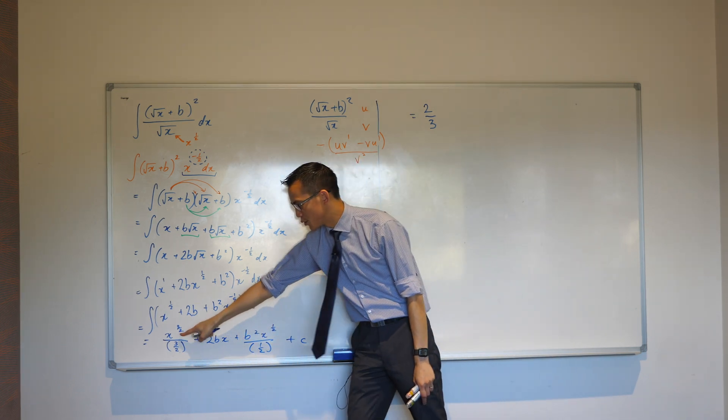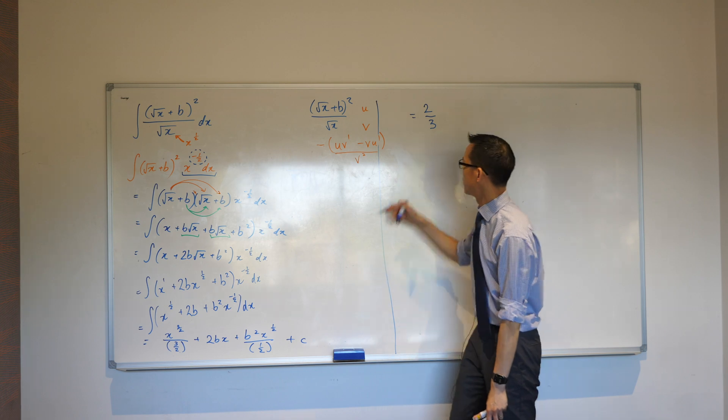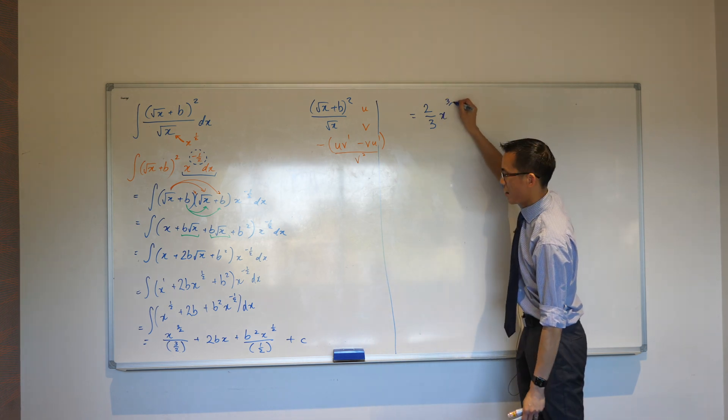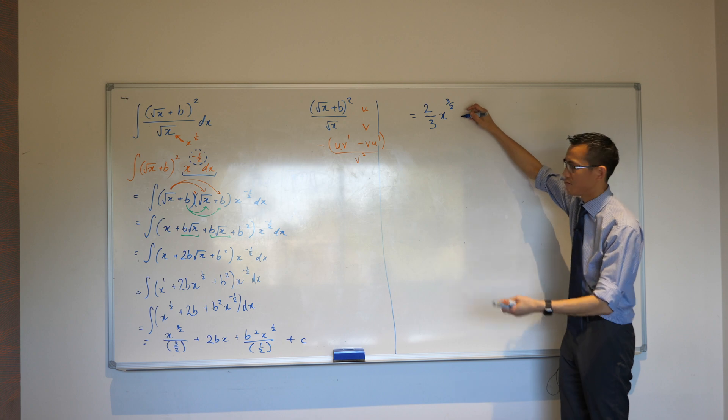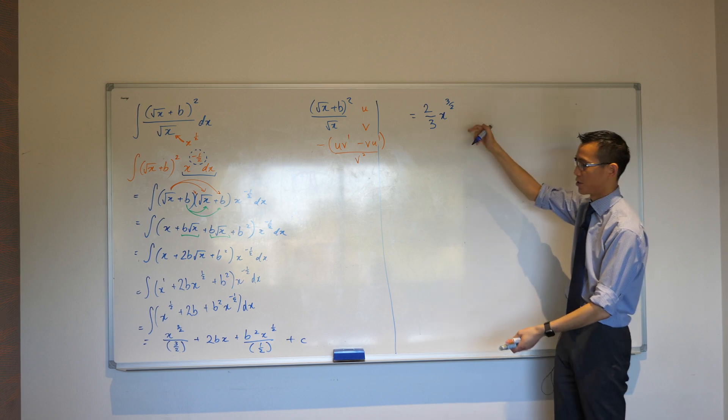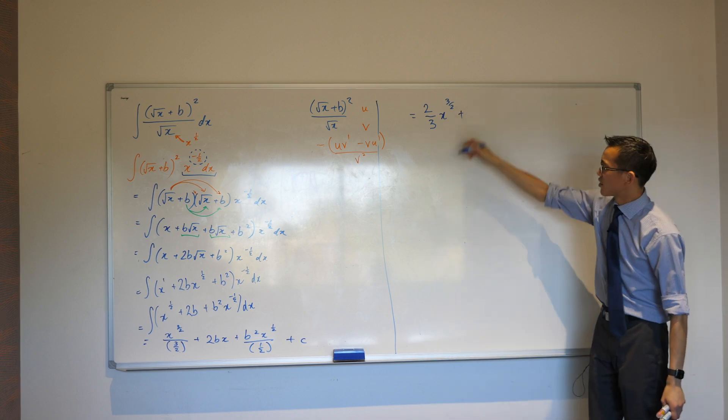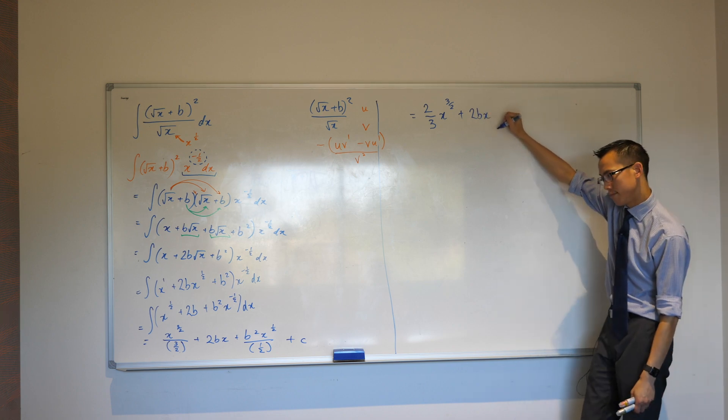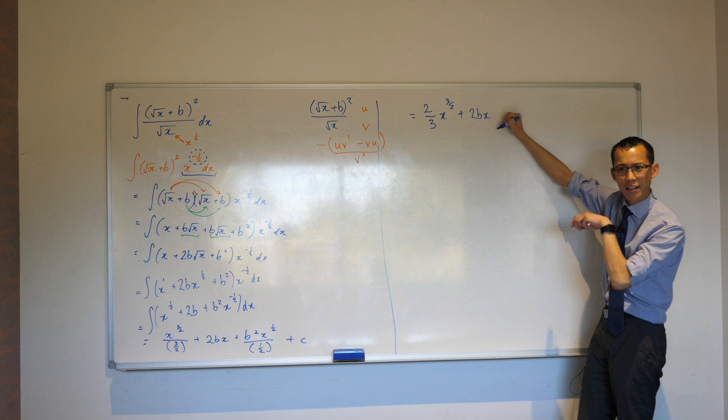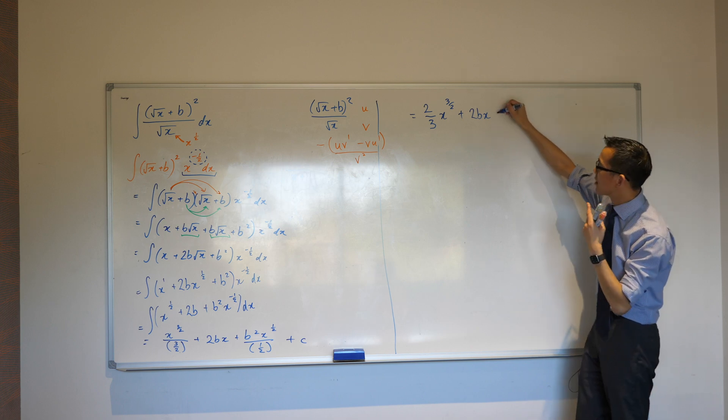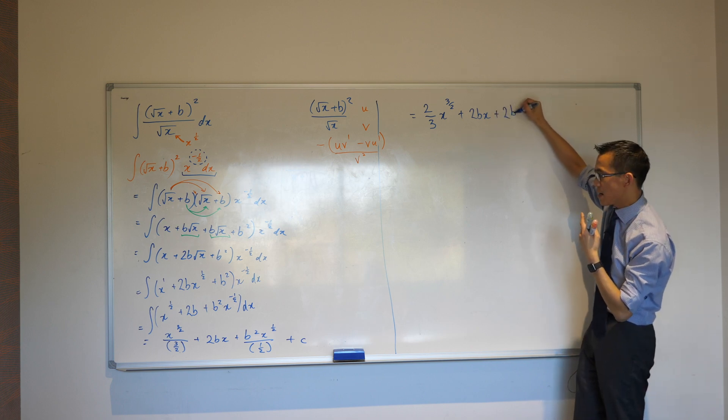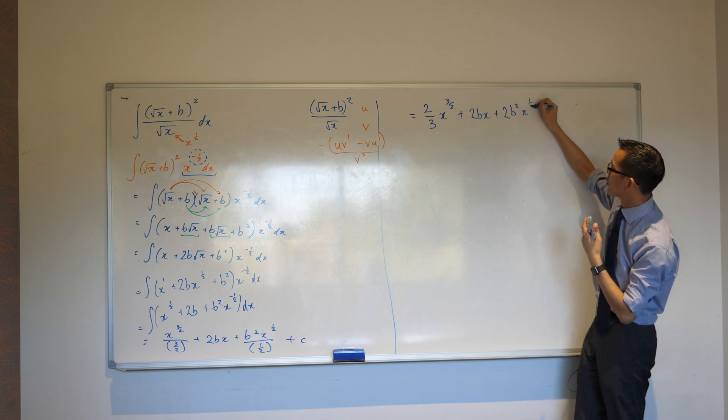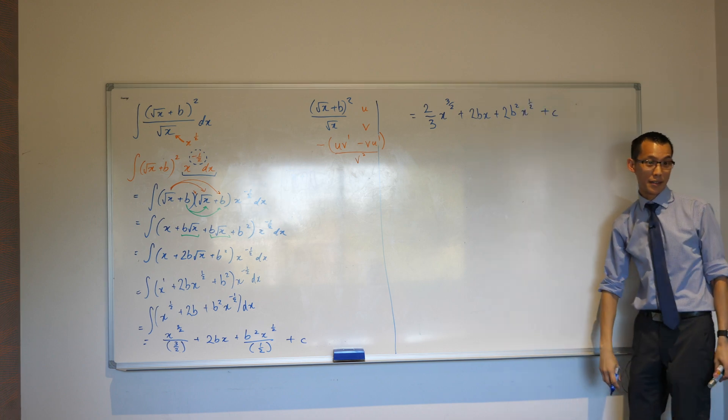Now, you probably could just leave that x to the power of three on two. But I will tell you in a minute what you would do if you didn't want to. That next term, 2bx, nothing to do there. Can you help me out with this last one? What happens with that half down the bottom? Yeah, very good. 2b squared. And then that x to the half is still there, plus the constant you told me about.